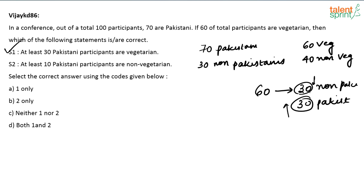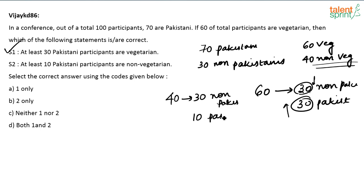Statement two: at least 10 Pakistani participants are non-vegetarians. How many people are non-vegetarian? 40 are non-vegetarian. Maximum, out of these 40, only 30 can be non-Pakistanis because there are only 30 non-Pakistanis. So the remaining at least 10 Pakistanis have to be non-vegetarian. That is also correct. Both statements 1 and 2 follow. Option D is your answer.